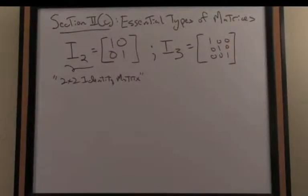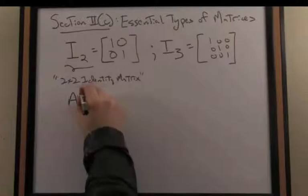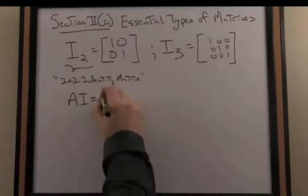The defining feature of the identity matrix in an algebraic sense is that when I multiply any square matrix times the identity matrix, I get that matrix back. So in other words, A, let's say A is an n by n matrix, times the identity is equal to A itself.